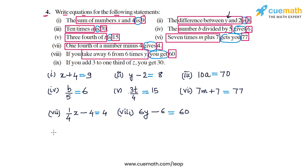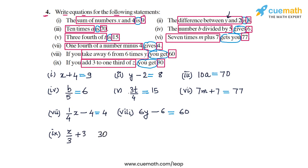Finally, in part 9, the statement says: if you add 3 to 1/3 of z, you get 30. This becomes the equal to sign, with the LHS being add 3 to 1/3 of z, and the RHS being 30. 1/3 of z can be written as z by 3, add 3 to this so z by 3 plus 3 is your LHS. Your RHS is 30, and these two are equal. So this is your equation in part 9, and with this all the parts of question 4 are completed.